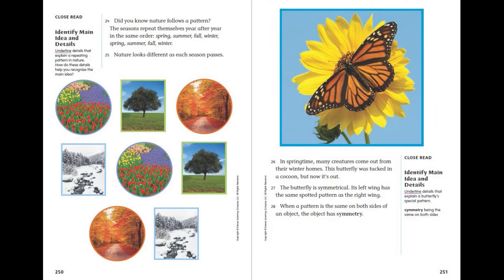Did you know nature follows a pattern? The seasons repeat themselves year after year in the same order: spring, summer, fall, winter, spring, summer, fall, winter. Nature looks different as each season passes. In springtime, many creatures come out from their winter homes.